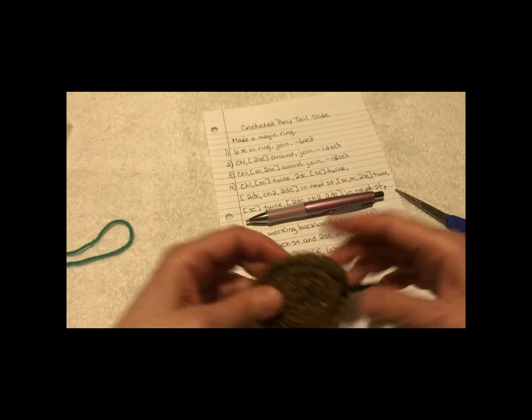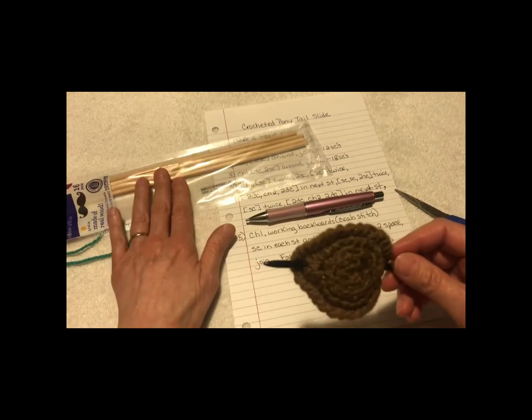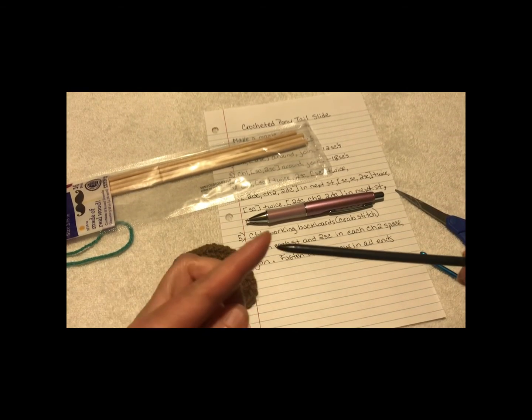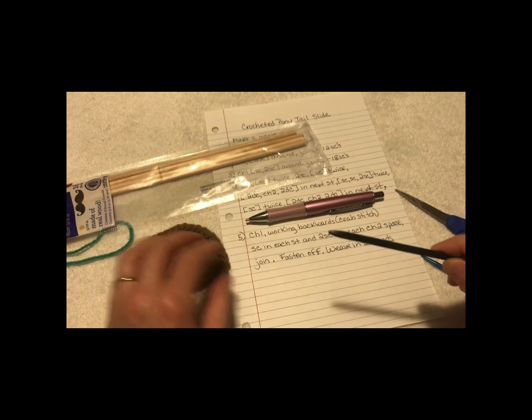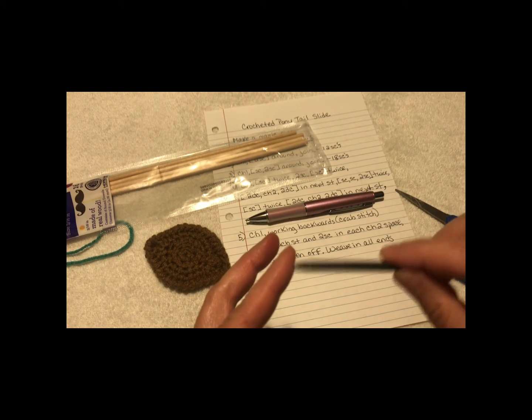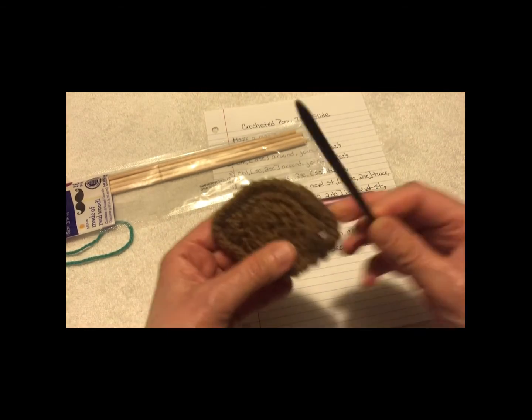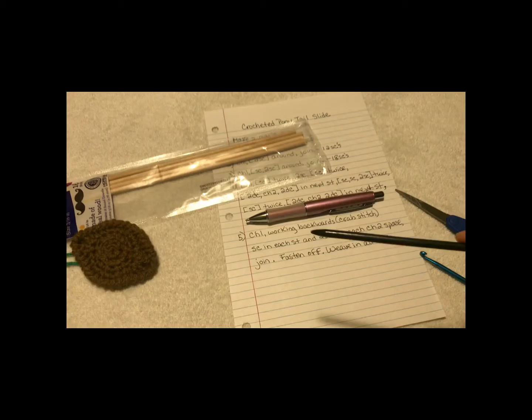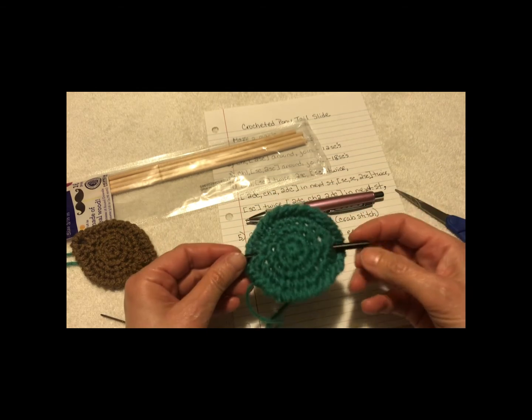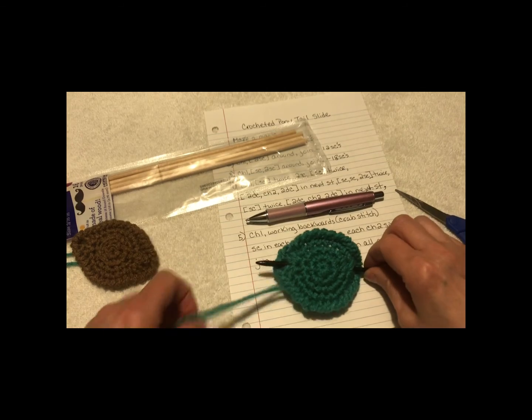So once you get that all done, you're going to take your dowel, cut it with a regular knife. It's pretty soft wood. Put in the pencil sharpener, and then take your sandpaper or nail file or emery board, and just file down the end so it's not sharp. Stain it, keep it plain, and then in these chain 2 slots, you're going to just put it through. And this is a good way to get rid of all your extra yarn, little stashes that you have.